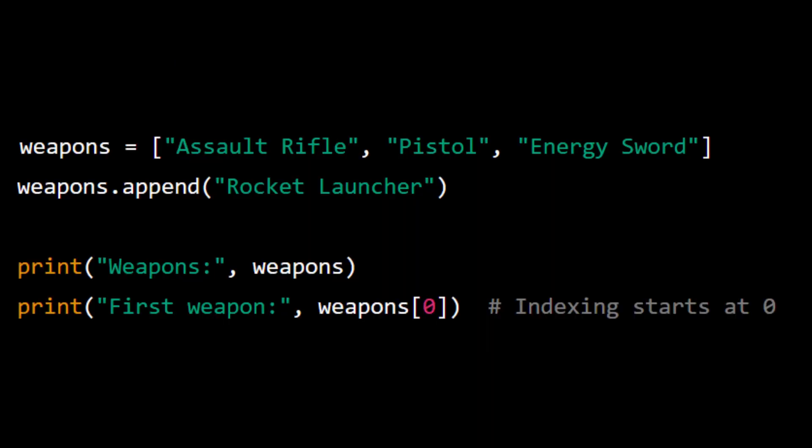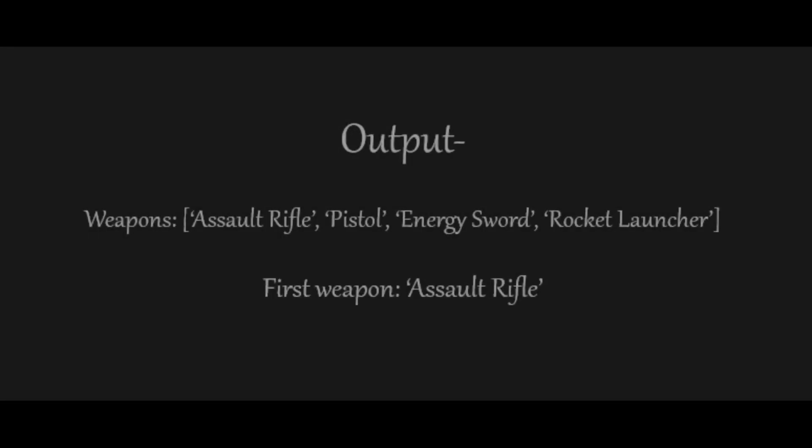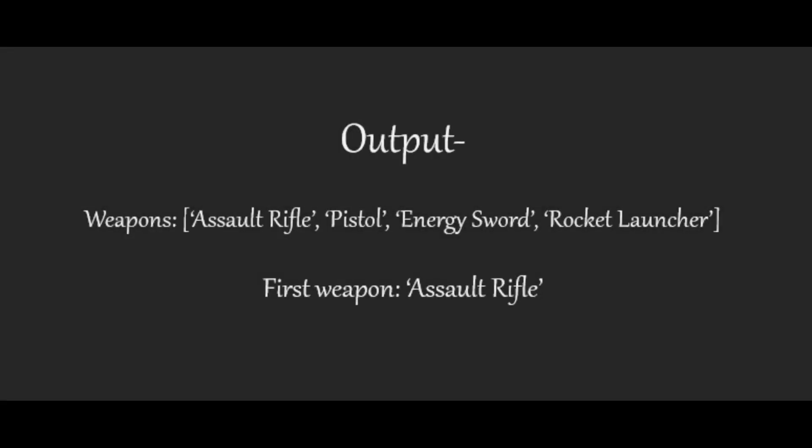Example: weapons = ["assault rifle", "pistol", "energy sword"]. weapons.append("rocket launcher"). print("Weapons", weapons). print("First weapon", weapons[0]).